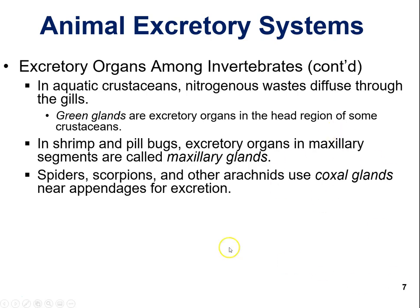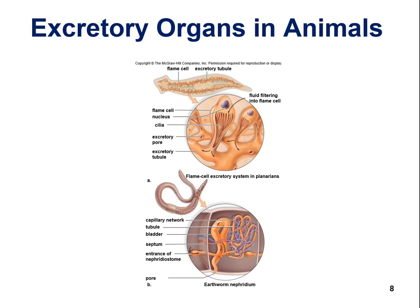Shrimp and pill bugs have excretory organs in maxillary segments called maxillary glands. Spiders, scorpions, and arachnids have something called coxal glands. There are a variety of different excretory organs among invertebrates, all serving the same main function. Looking at flame cells in planarians — these are connected to tubules — and the function is to maintain water-salt balance and excrete metabolic waste.